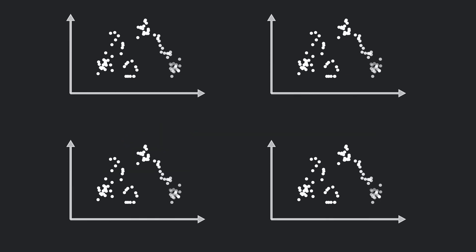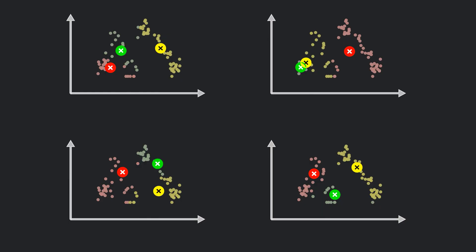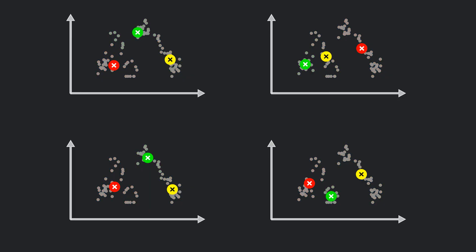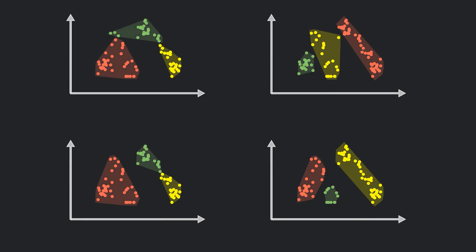One problem with random initialization is that the clusters can come out differently on different runs. With the same dataset, if the algorithm starts with a different random initialization of centroids, we can end up with slightly different clusters. A good way to pick the best result is to calculate the cost function for each run and choose the clustering with the minimum cost. Here I've shown it with 4 random initializations, but in real-world applications k-means is often run with hundreds of different initializations to make sure we get a stable result.